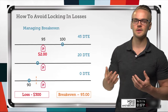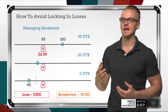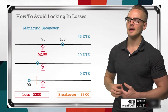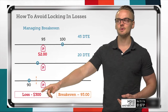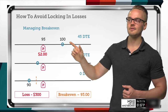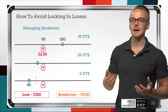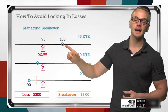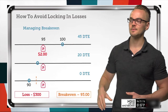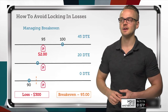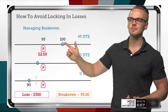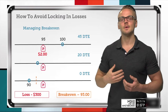Our break-even goes from $95 down to $93 because of the $2 premium collected. Compare that $300 loss to a $1,000 loss we'd have if we'd bought shares outright at $100 — a huge difference. The orange bar on the slide represents our break-even at $93. We only need the stock to return to $93 to break even, versus needing it to go all the way back to $100 if we'd purchased outright.